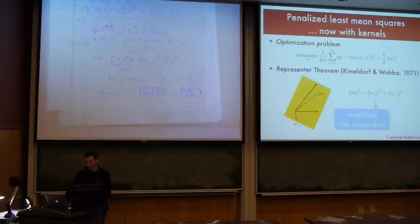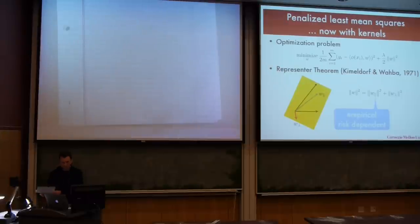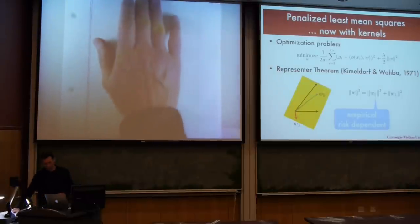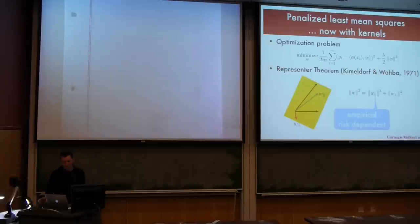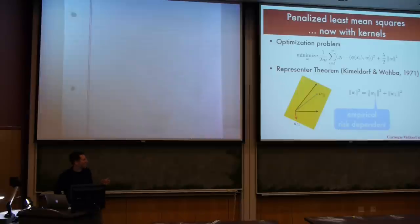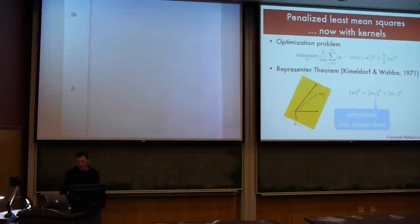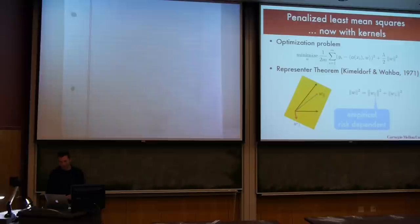Now let's do the entire thing with kernels. The optimization problem looks the same as before except now rather than x we have φ(x). This introduces the representer theorem. The representer theorem — one of Grace Wahba's first papers, accepted as-is — basically says that the solution of an optimization problem of that form must have w given by a linear combination of the φ(x_i)'s.